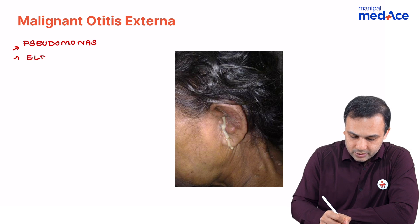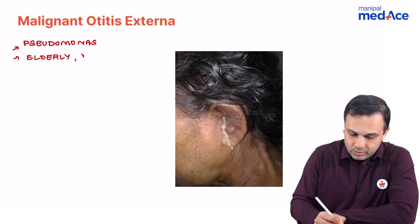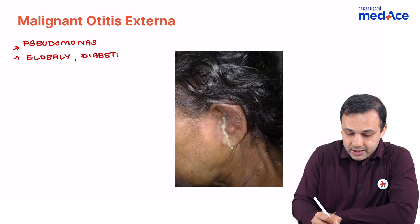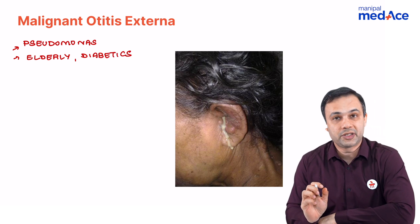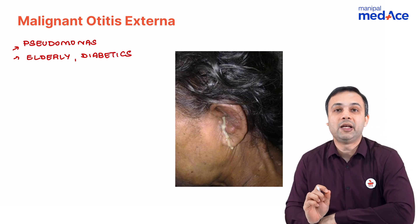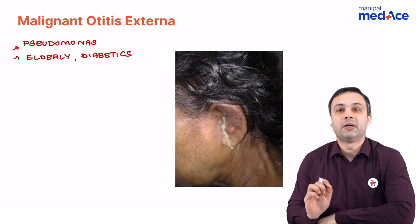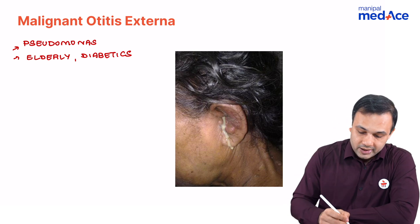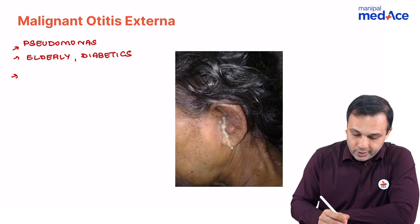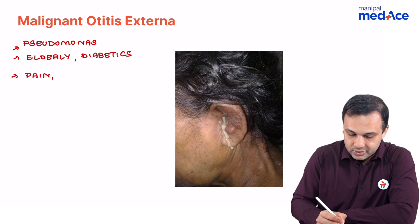The second important point is that malignant otitis externa occurs most commonly in the elderly and most commonly in diabetics. Immunocompromised conditions should not be ruled out, as any immunocompromised state can also produce malignant otitis externa.